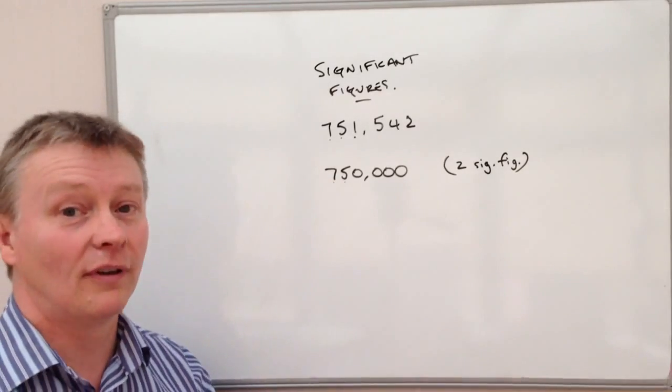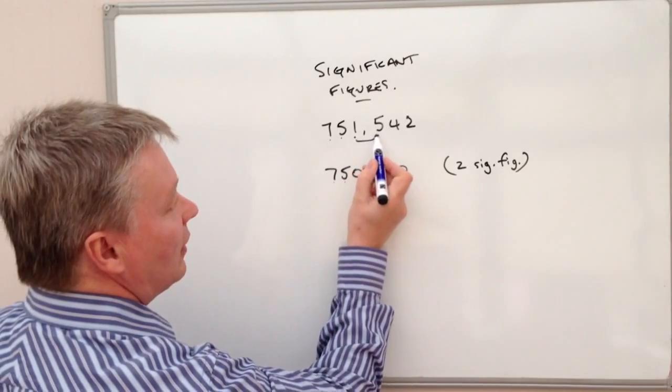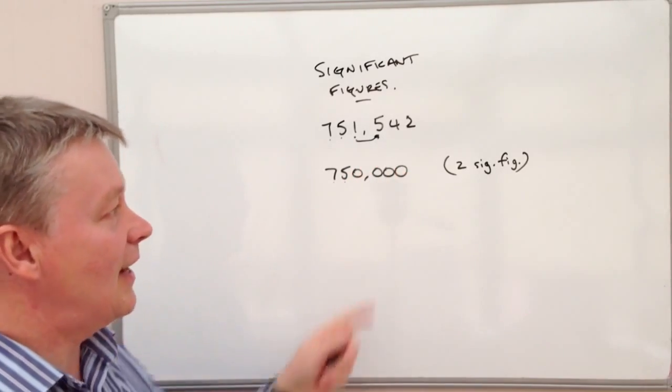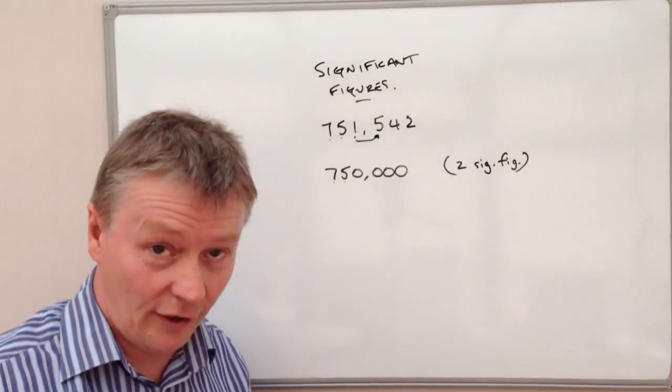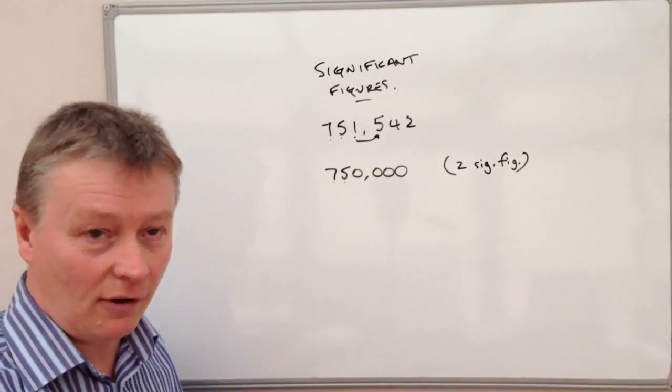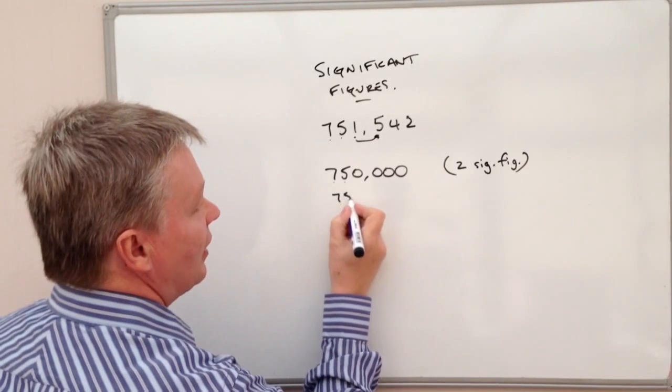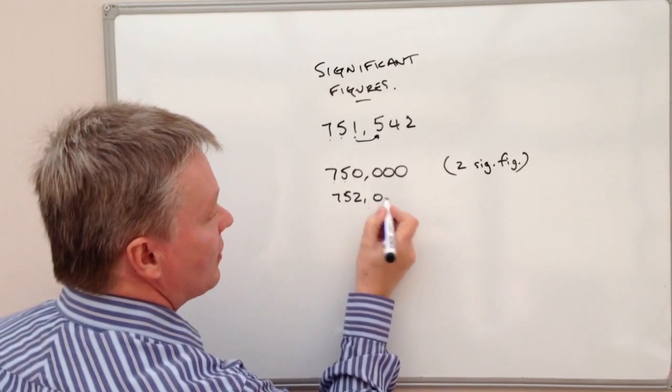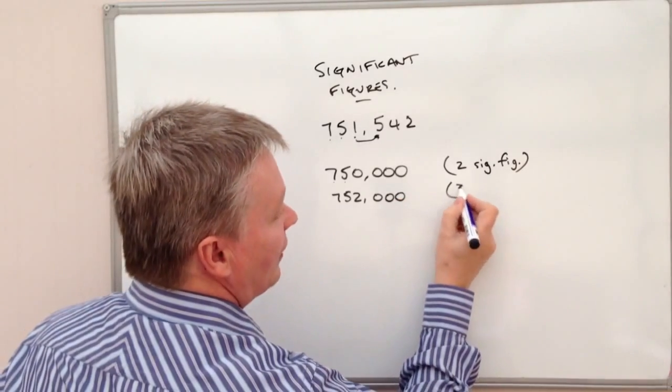So if I look at the next number along, well, that's a five. And if the next number along is five or above, it means this number changes to go up. So actually, to three significant figures, it becomes 752,000.